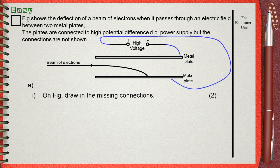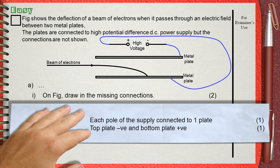The mark scheme awards two marks. The first mark is for each pole of the supply being connected to one plate — a common mistake is connecting one pole to both plates or both poles to one plate, which is wrong. The second mark is for the top plate being negative and the bottom plate being positive, which is exactly what we did.